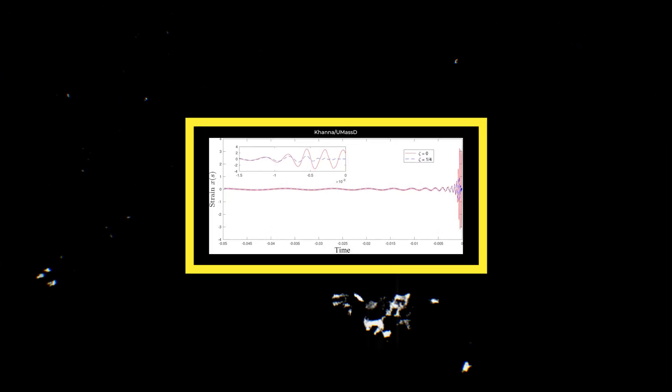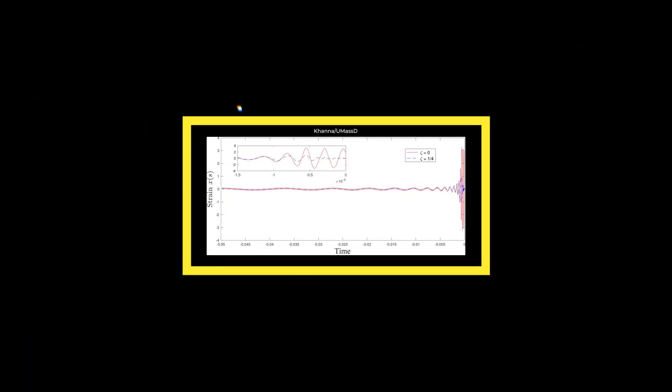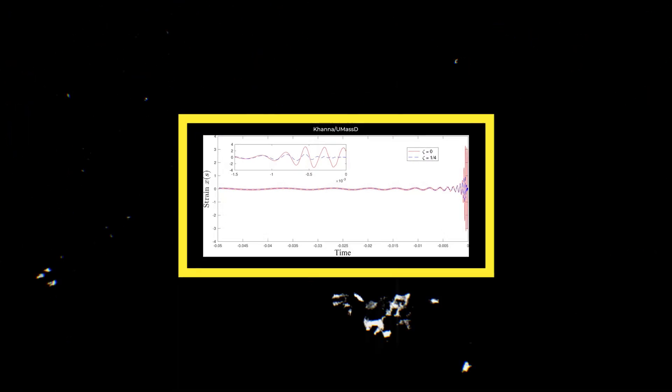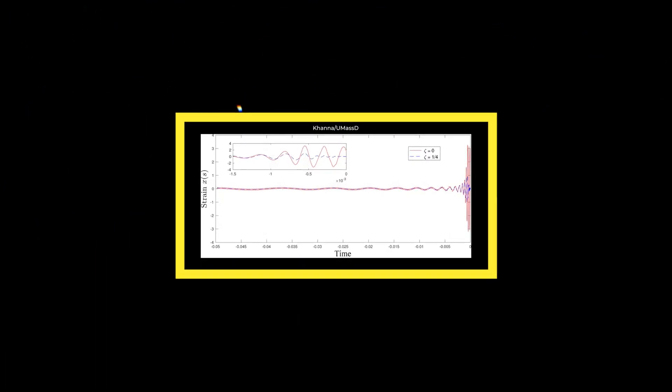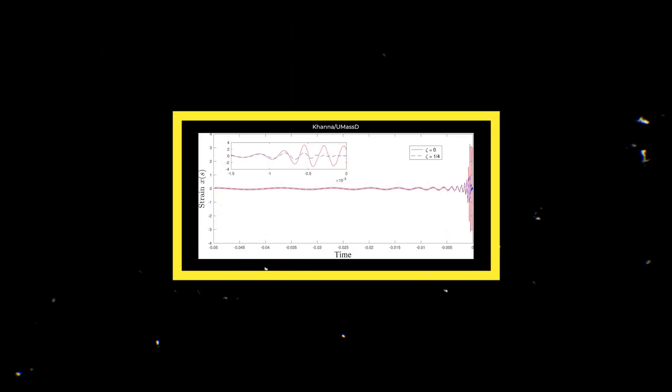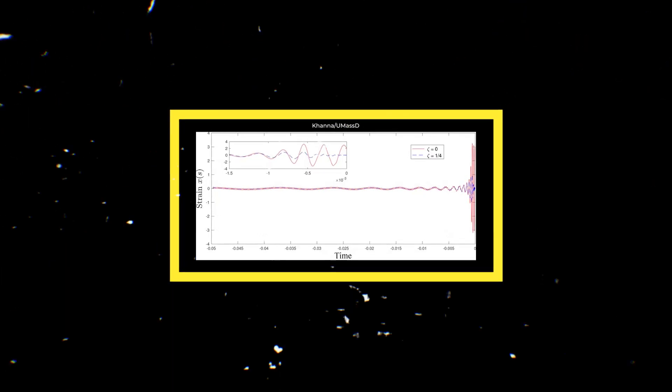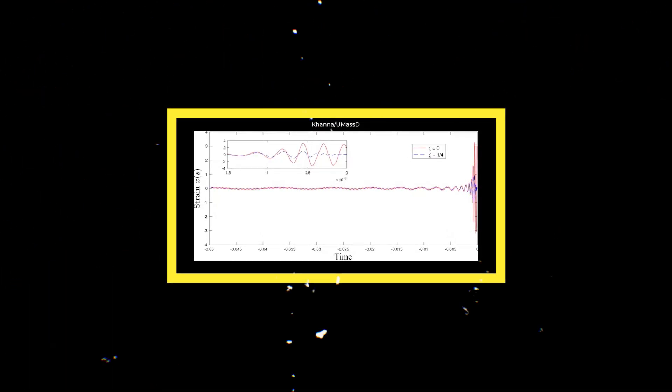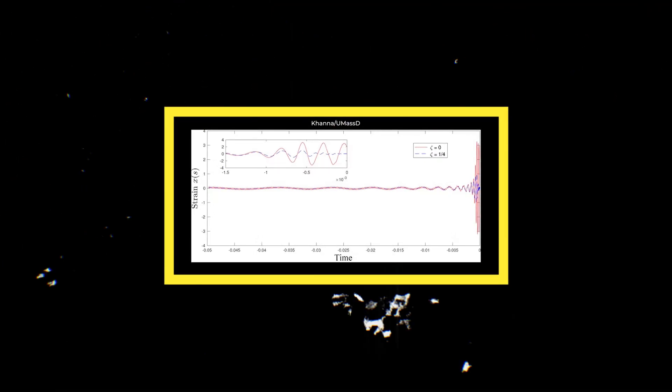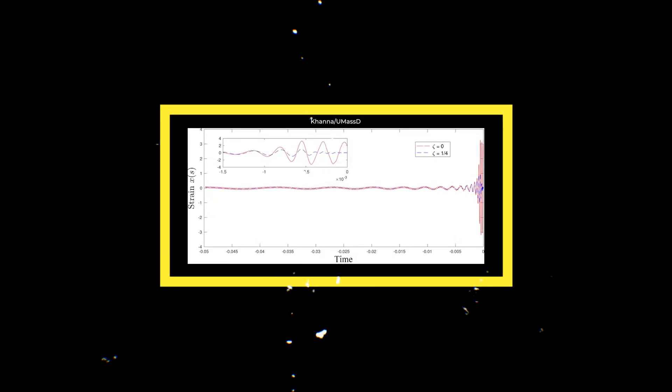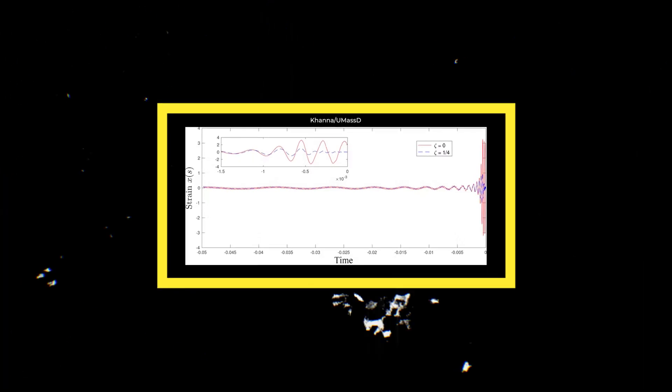This graph depicts the physical strain on the spacecraft's steel frame as it plummets into a rotating black hole. The inset shows a detailed zoom in for very late times. The important thing to note is that the strain increases dramatically close to the black hole, but does not grow indefinitely. Therefore, the spacecraft and its inhabitants may survive the journey.